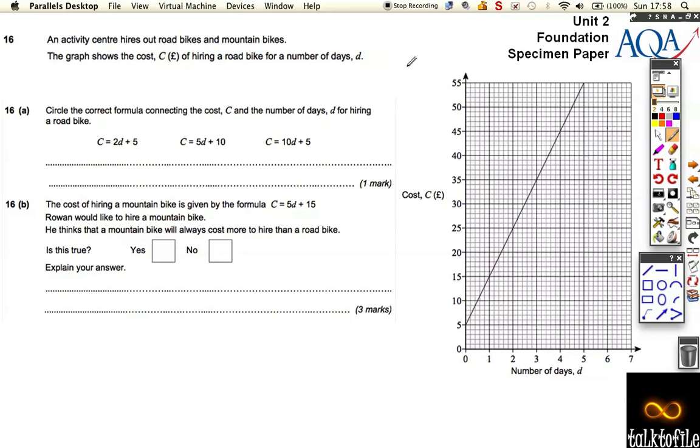The cost for hiring out a road bike - this graph here shows the cost for a road bike, and we've got to find the correct formula. There's two bits of information we can find out. The start of this graph down here starts at 5, and the step each time - every time you go one day across it goes from 5 to 15, so it's going plus 10. Then another day it goes from 15 up to 25, which is another plus 10, so the step each time is 10.